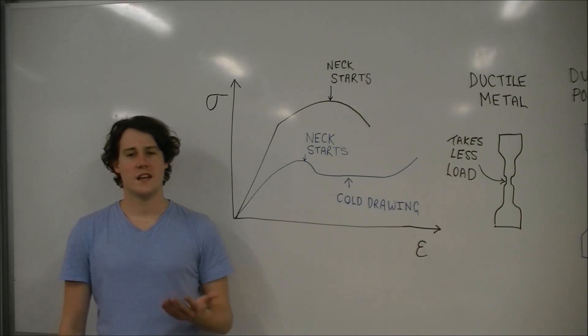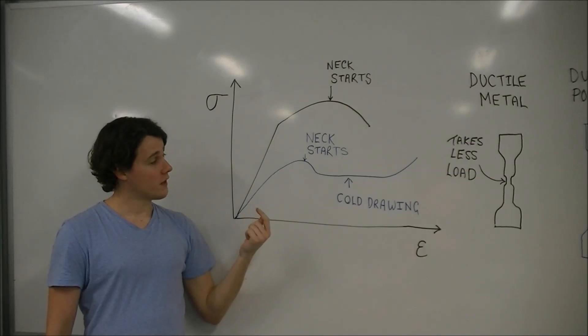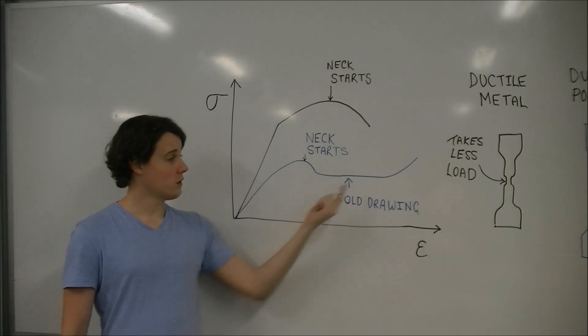Why after necking does the tensile curve in a ductile metal go down, while the tensile curve for a ductile polymer it can go up?